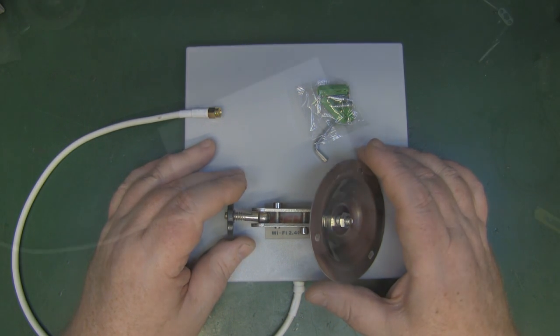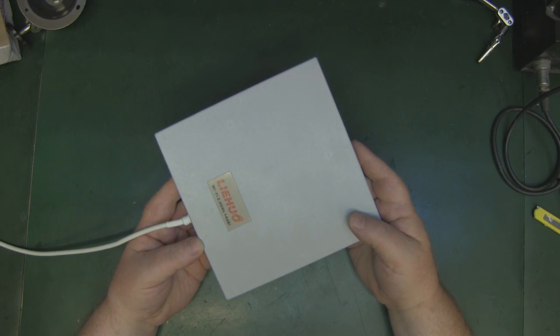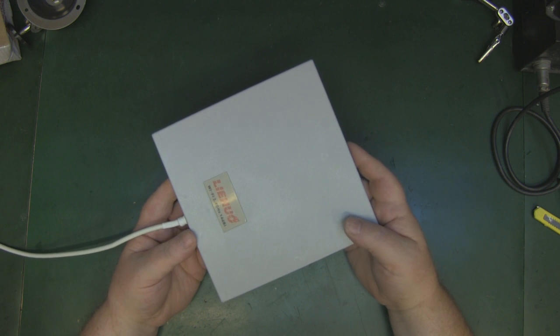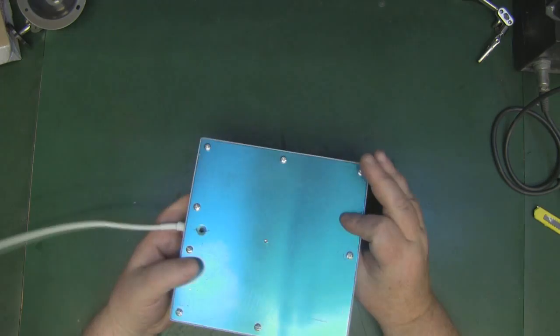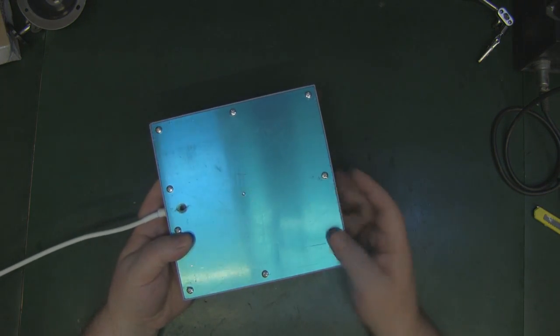The antenna itself has certainly got some weight to it. It gives you a feeling that there's definitely some quality going on here, and that's probably all down to the thickness of the reflector on the back.